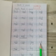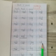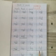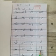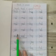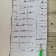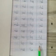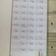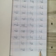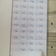R says R, O says O, T says T — Rot. T says T, O says O, T says T — Tot. B says B, O says O, Y says Y — Boy. J says J, O says O, Y says Y — Joy.